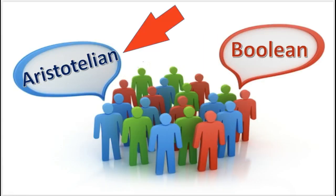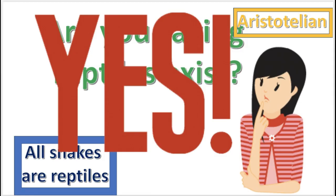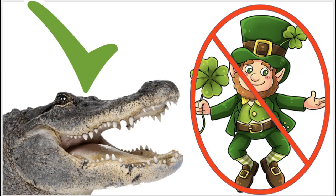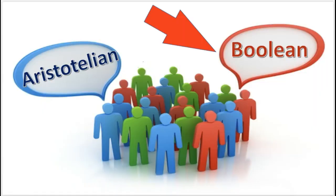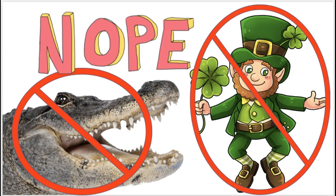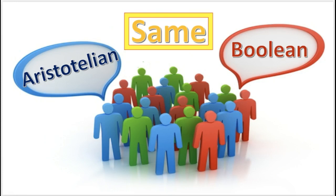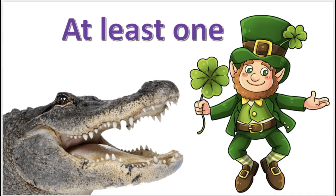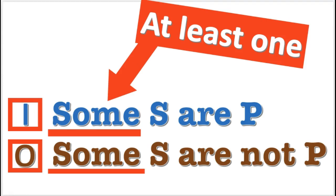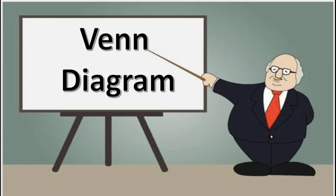In summary, according to the Aristotelian interpretation of universal categorical propositions, the proposition always implies the existence of the thing talked about, but only if that thing actually exists. According to the Boolean interpretation, the proposition never implies the existence of the thing talked about. When it comes to the I and O propositions, both the Aristotelian and the Boolean interpretations are the same — they both imply the existence of at least one thing talked about. Some means at least one. For the purposes of this video, we'll be using the Boolean interpretation.